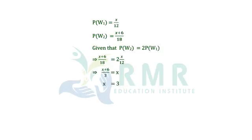We know the value of X, so we substitute it into P of W1. P of W1 equals X by 12. After substituting X equals 3, we get 3 by 12. After simplification, we get 1 by 4. So P of W1 is 1 by 4 and the X value is 3.